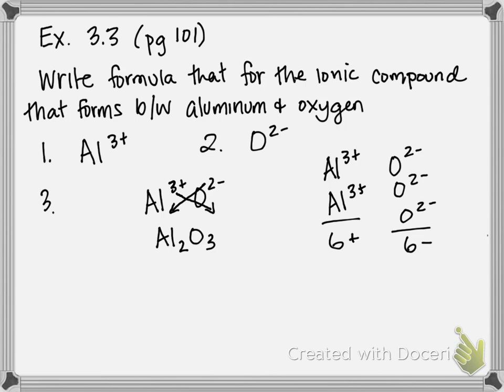we have 1, 2 aluminum, so it's Al2. And 1, 2, 3 oxygens, so it becomes O3. See, either way we approach it, it gives you the same answer. Whatever makes more sense to you in your head.